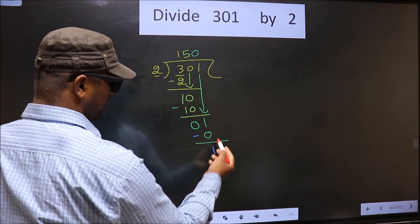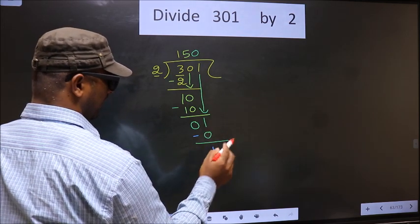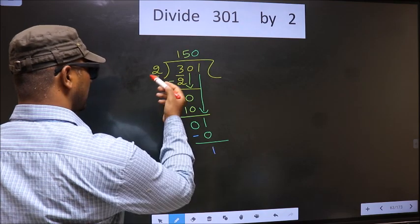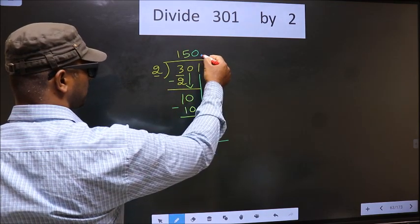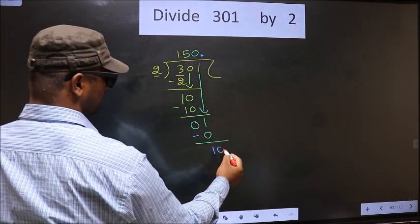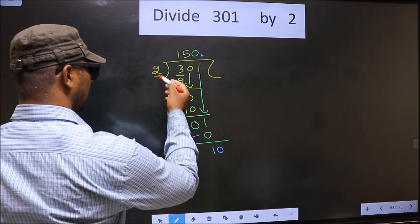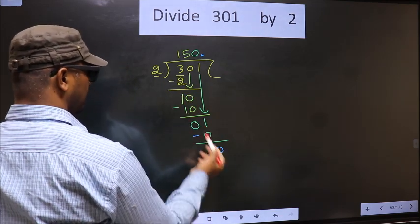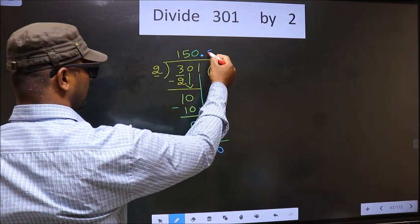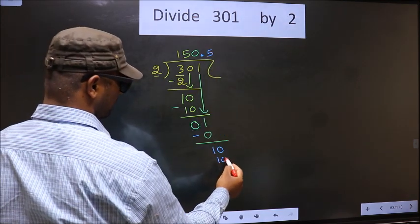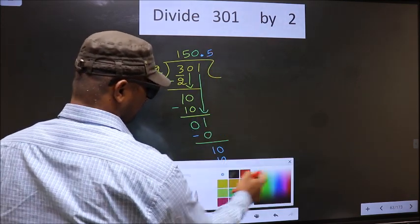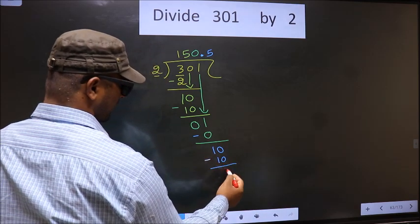Over here, we did not bring any number down. And 1 is smaller than 2. So now you can put a dot and take 0 here. So here 10, here 2. When do we get 10 in 2 table? 2, 5, 10. Now you subtract. 10 minus 10, 0.